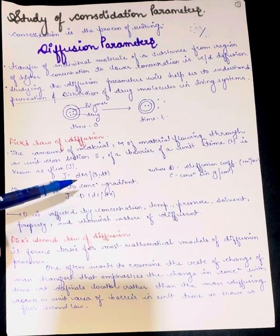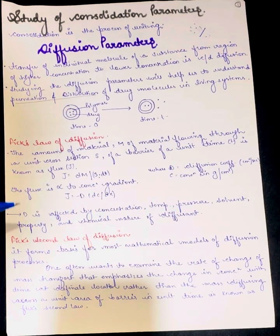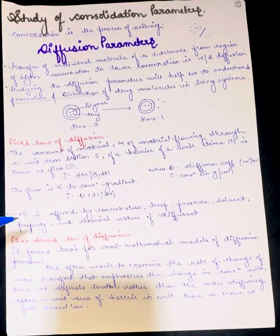J equals minus D times (dC/dx), where capital D is affected by the concentration, temperature, pressure, solvent property, and the chemical nature of the diffusion.